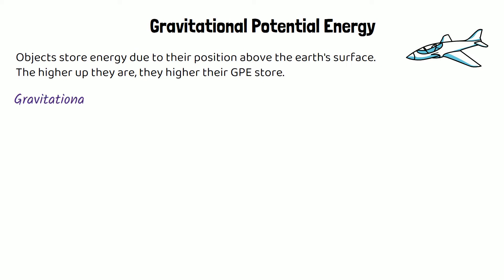You're going to need an equation to calculate this, which is gravitational potential energy equals mass times gravitational field strength times height. Energy is measured in joules, mass in kilograms, gravitational field strength in newtons per kilogram, and height in meters. So if any of your units are not given in these units, you need to convert them.